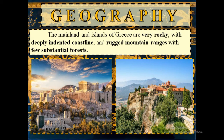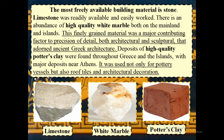The mainland and islands of Greece are very rocky, with deeply indented coastlines and rugged mountain ranges with few substantial forests. The most freely available building material is stone. Limestone was readily available and easily worked. There is an abundance of high-quality white marble both on the mainland and islands, which was a major contributing factor to precision of detail, both architectural and sculptural, that adorned ancient Greek architecture. Deposits of high-quality potter's clay were found throughout Greece and the islands, with major deposits near Athens, used not only for pottery vessels but also roof tiles and architectural decorations.